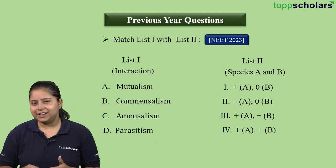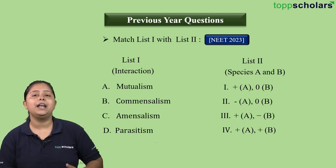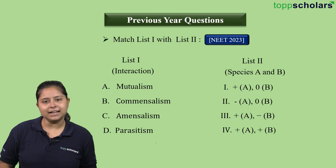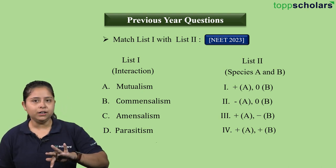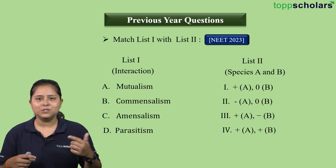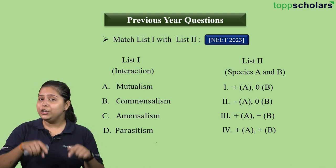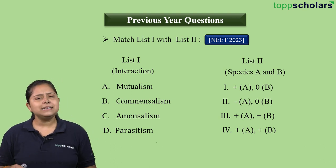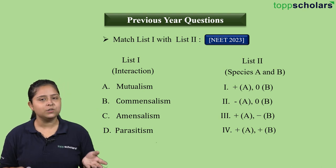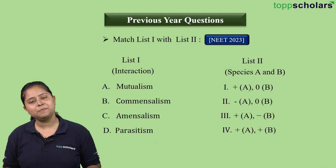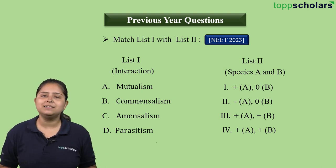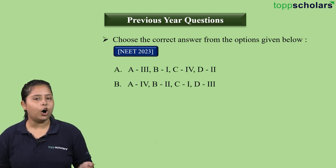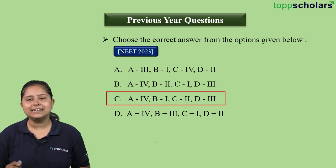By remembering the table we can easily solve such questions. For mutualism: lichen — fungus and algae both benefited, so two plus signs. Commensalism: sharks and remora — shark unaffected, remora benefited — plus and zero. Amensalism: stepping on ants — ants get minus, you get zero. Parasitism: lice in human hair — lice get plus, human gets minus. Using these examples, option C is the correct answer for this NEET 2023 question.